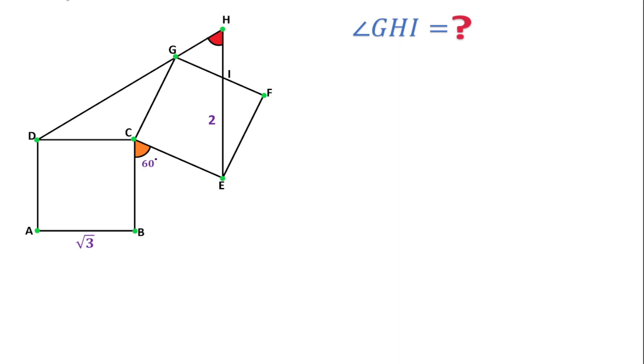To find this angle I will connect B and E. Since both squares are equal, this side and this side will also be equal, and this angle and this angle will be 60 degrees also, so that the sum of these three angles is equal to 180.